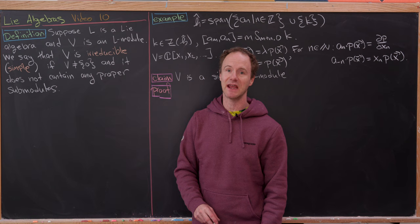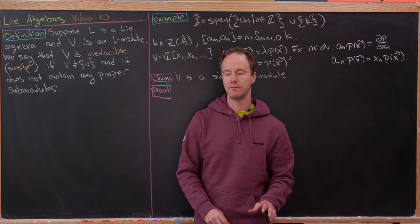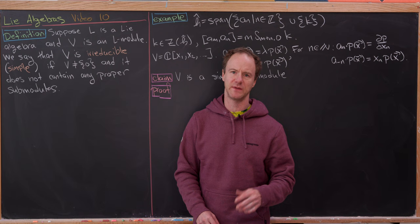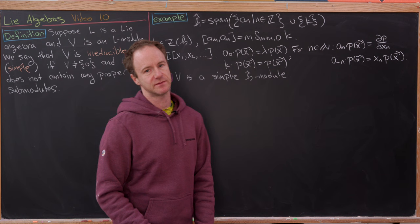We looked at the definition of a submodule last time. It was essentially a vector subspace W which was L-invariant for all elements of L — in other words, if you acted by an element of the Lie Algebra, you landed back in the vector subspace.